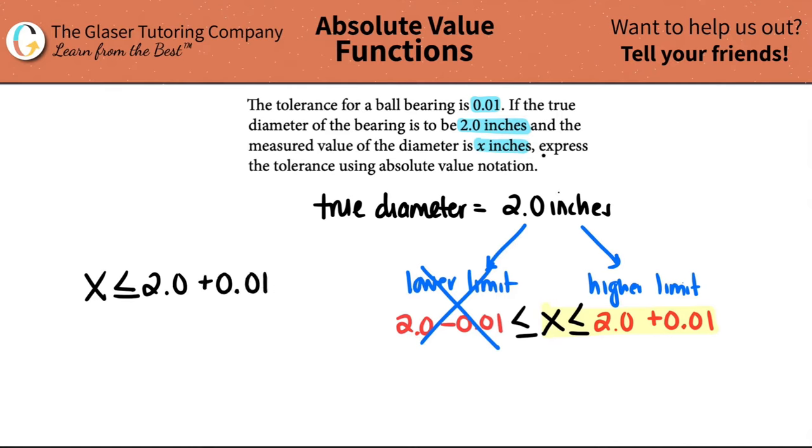Now they want to express the tolerance using absolute value notation. So if you want to express the tolerance, that means that you want to solve for the tolerance. That means that the tolerance, which they told us was 0.01, has to be the only thing on one side of this inequality. So I have to get rid of the 2.0. So I will minus the 2.0 from both sides. And now I get x minus 2.0 is less than or equal to 0.01.